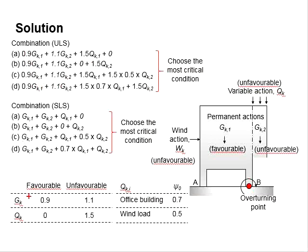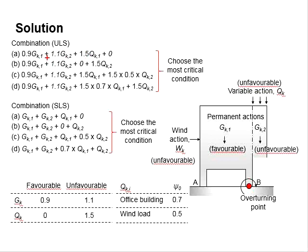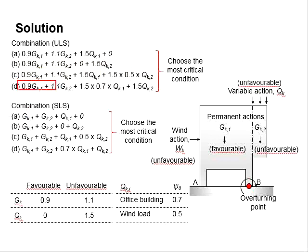These actions are combined using four load combination cases: (1) GK plus QK only; (2) GK plus wind load only; (3) GK plus QK plus wind load, with QK as the primary leading variable action; and (4) GK plus QK plus wind load, with wind load as the leading variable action.